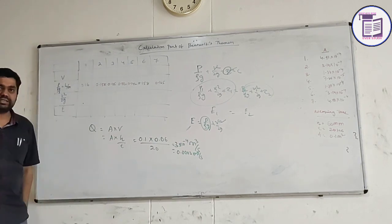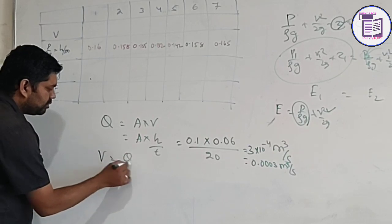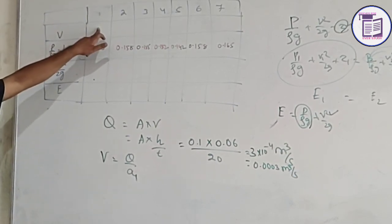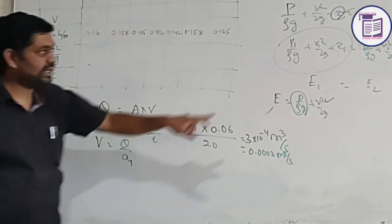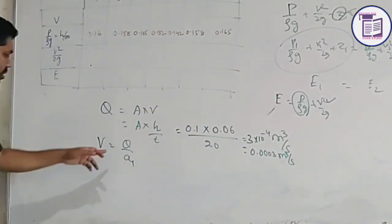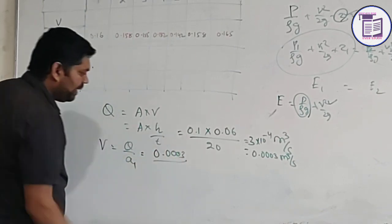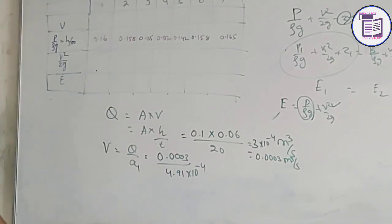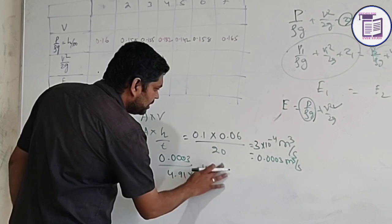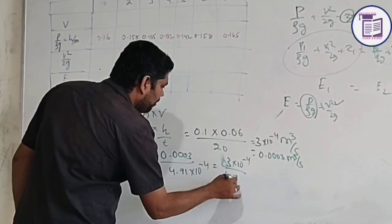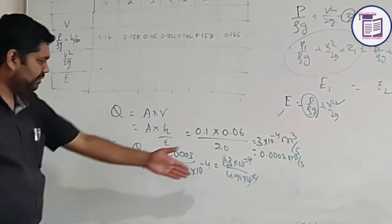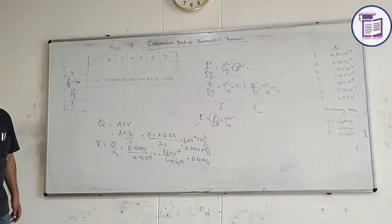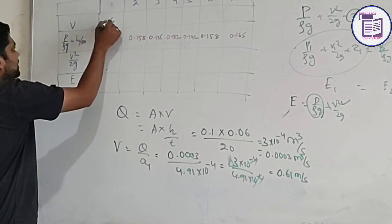Now, using this Q we will find the velocity at different sections 1, 2, and 3. Velocity equals Q divided by A1 for section 1. When we are considering section 1, the area is already calculated as 4.91 into 10 to the power minus 4. So V1 equals 3 into 10 to the power minus 4 divided by 4.91 into 10 to the power minus 4. The minus powers cancel, giving 3 by 4.91, which equals 0.61 meter per second.